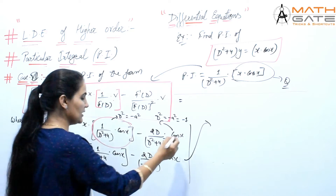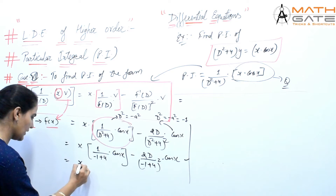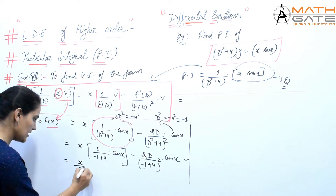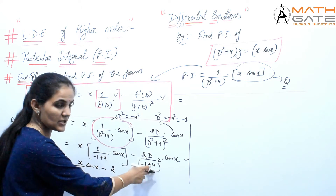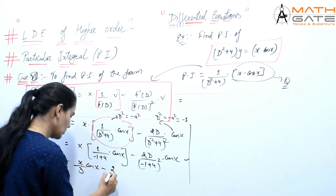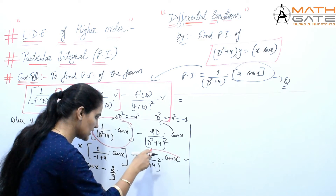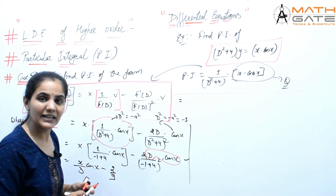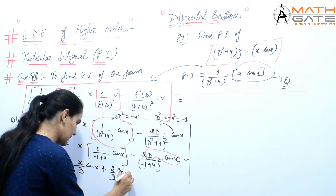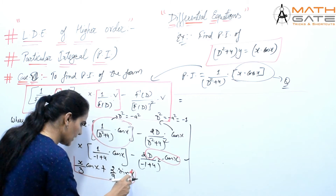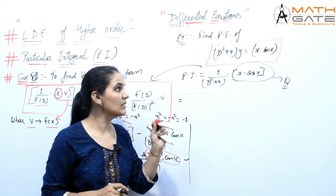Simplifying, this becomes x by 3 into cos(x), minus 2 by 9 into D of cos(x). The derivative of cos(x) is minus sin(x). This is the particular integral of the given differential equation D² + 4 into y equals x·cos(x).